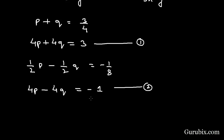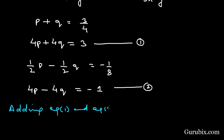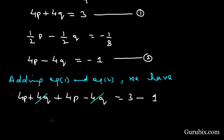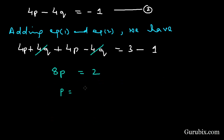Now we shall apply the elimination method to solve this pair of linear equations. We observe that the coefficients of q in both equations are the same but with opposite signs, so we add equation number 1 and equation number 2. We get 4p + 4q + 4p - 4q = 3 - 1. The ±4q terms cancel out, giving us 8p = 2.